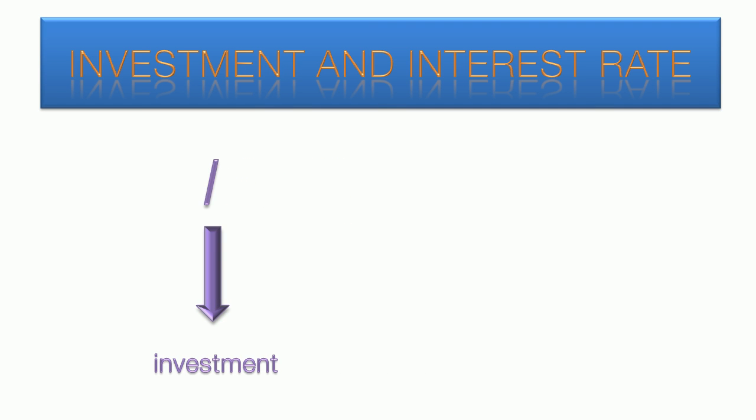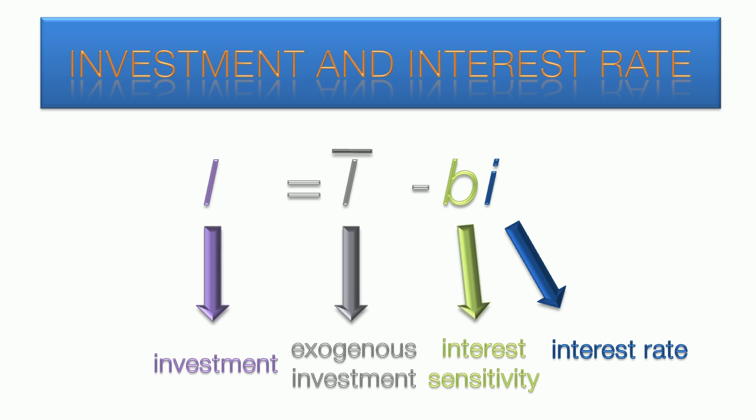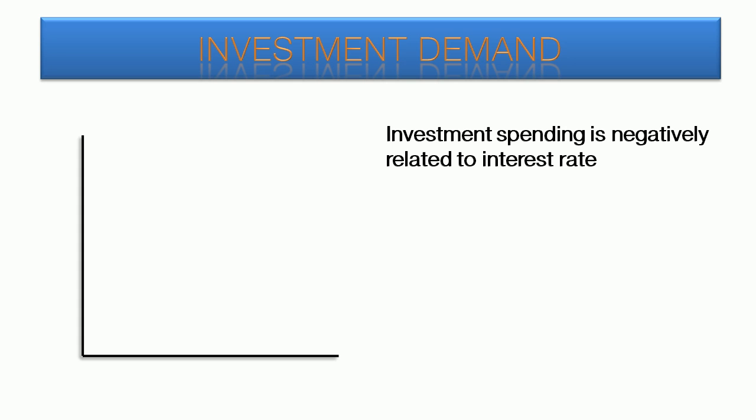There is, however, still a portion of investment that is unaffected by the interest rate. It is represented by I bar and called exogenous investment. Next we have interest rate, represented by the lowercase i. And as you see by the minus sign, investment is negatively related to the interest rate. The degree to which firms adjust investment spending relative to the interest rate is called interest sensitivity, which is represented by the lowercase b. This coefficient can be anywhere between 0 and 1.